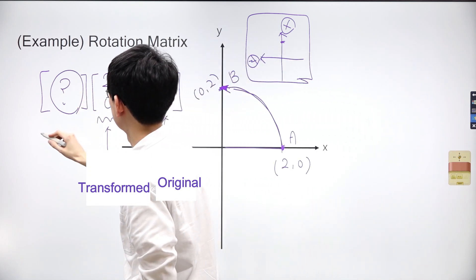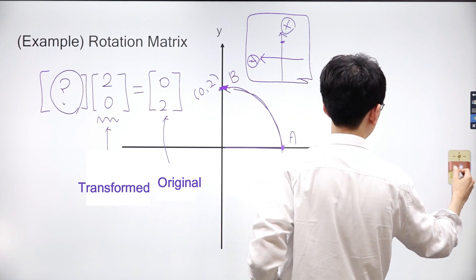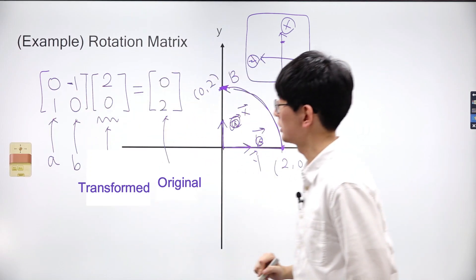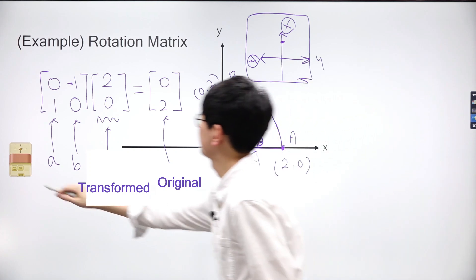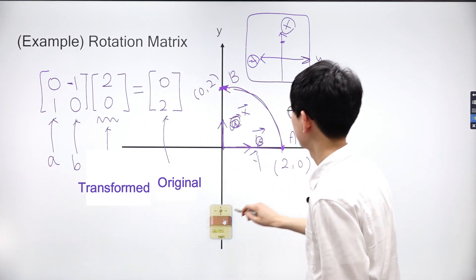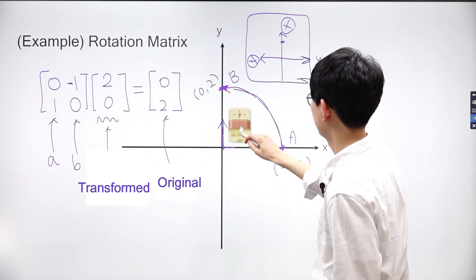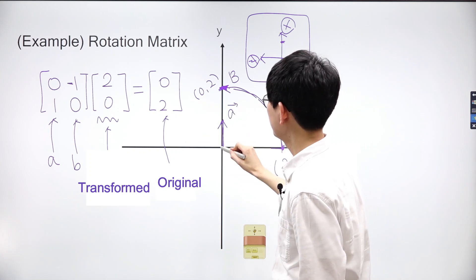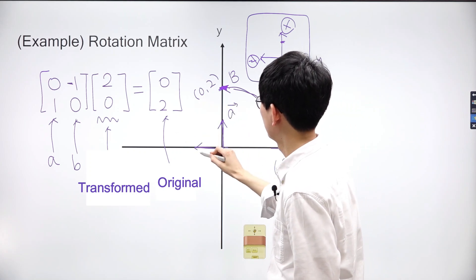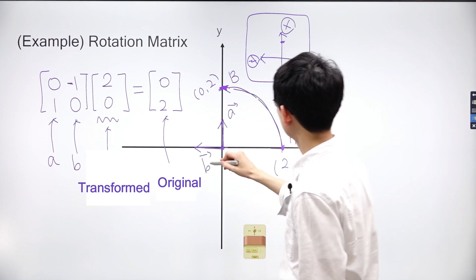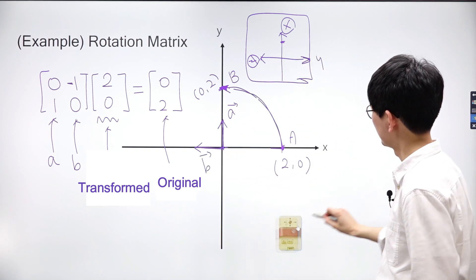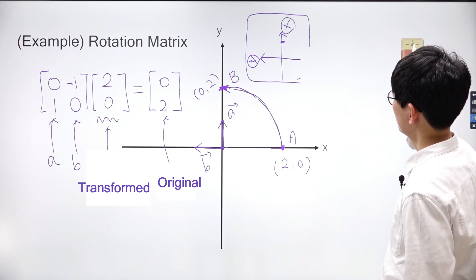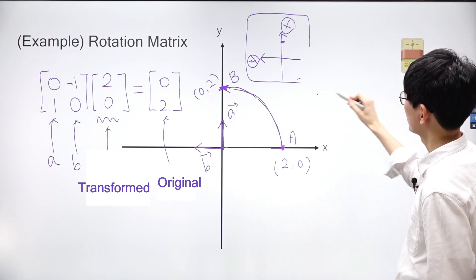How can we express this 90-degree rotation in a matrix? Let's consider the values 0, 1, -1, and 0 as potential entries for the matrix. Let's denote these vectors as A and B. The coordinates of vector A are (0,1), while the coordinates of vector B are (-1,0). That's what vectors A and B look like.